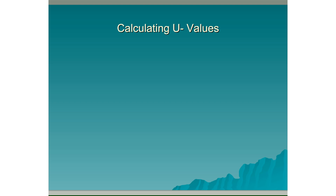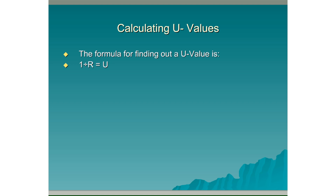Calculating U values. The formula for finding out a U value is 1 divided by R equals U. R is the total resistance of the materials to heat passing through them.